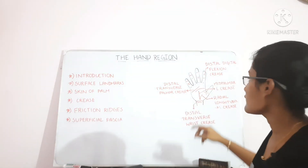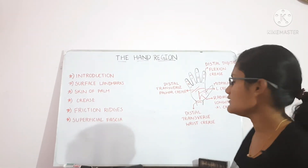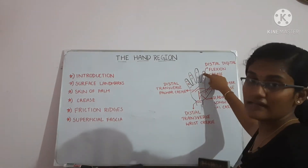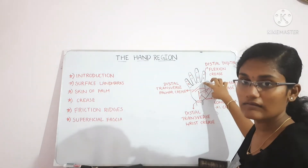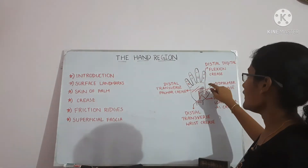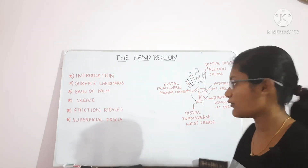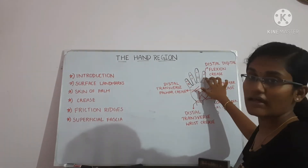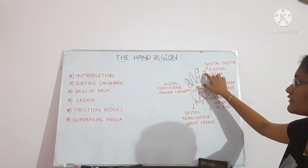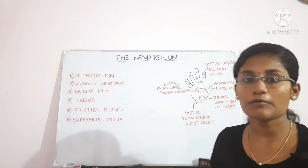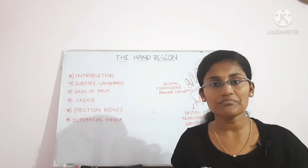In the digits there are three creases each: one at two centimeters away from the metacarpal joint, one is the proximal digital flexion crease, and one is the distal digital flexion crease. These are also produced by flexion, and when flexion takes place the creases become more prominent.